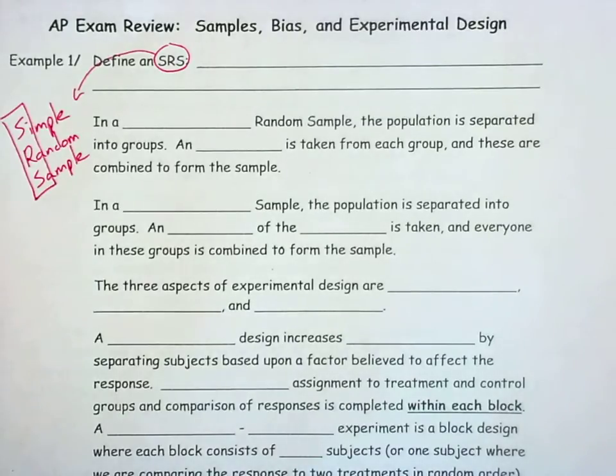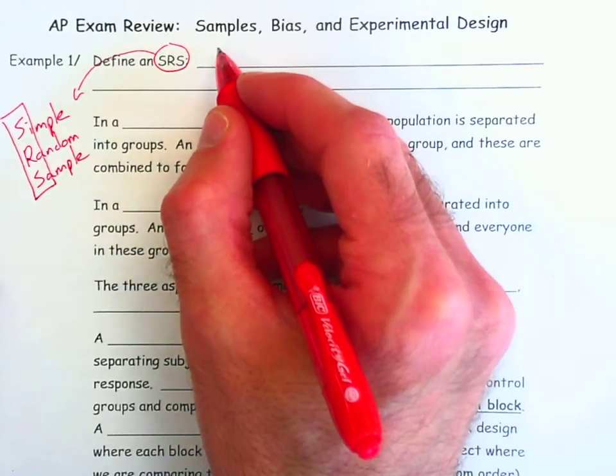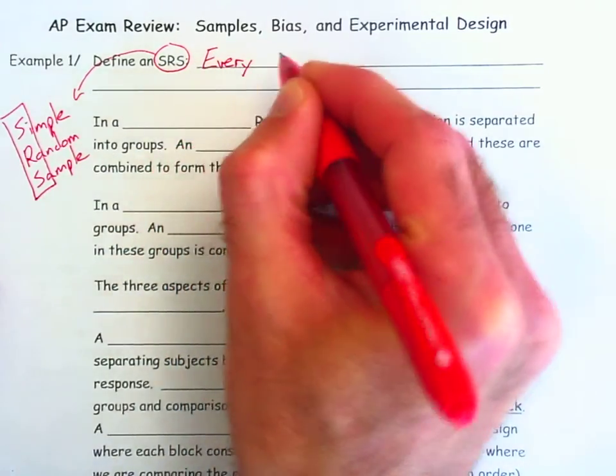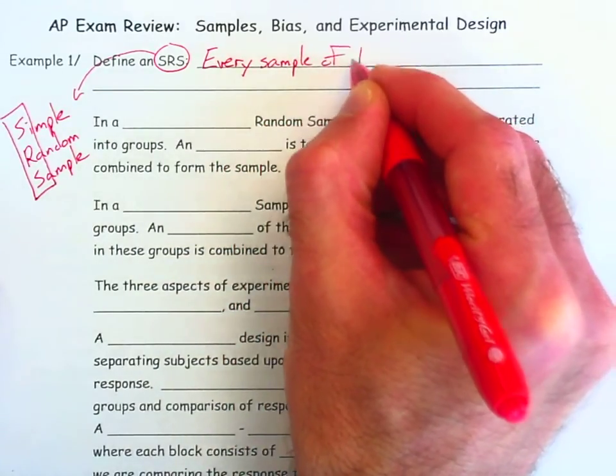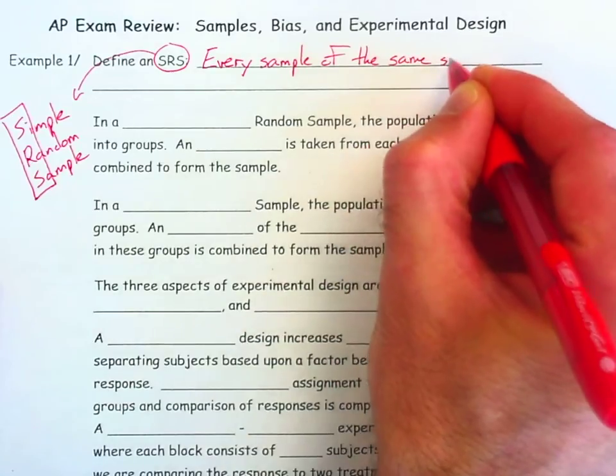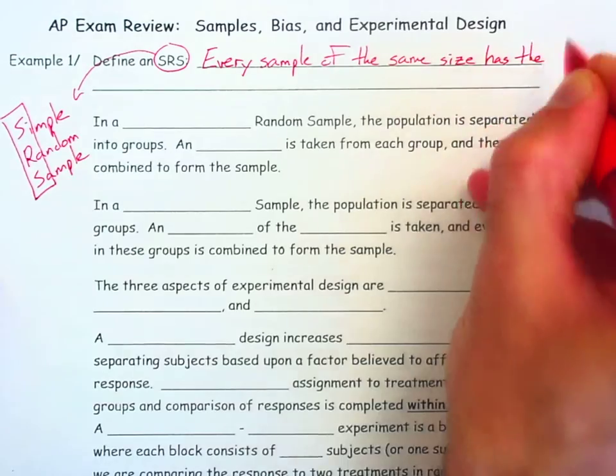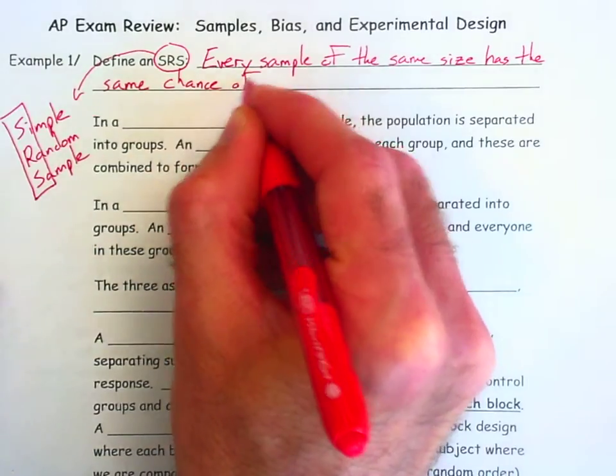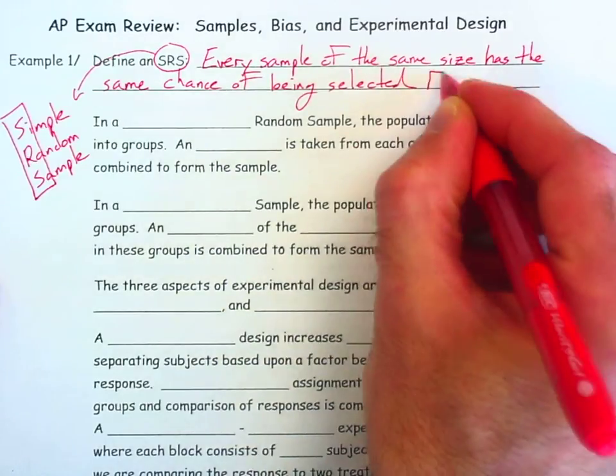A simple random sample has a very specific definition that you want to know. Every sample of the same size has the same chance of being selected from the population.